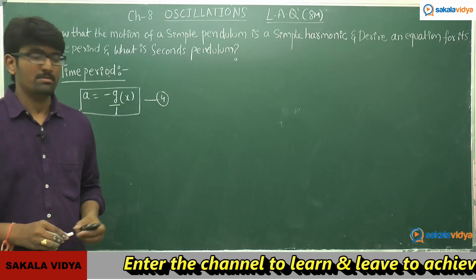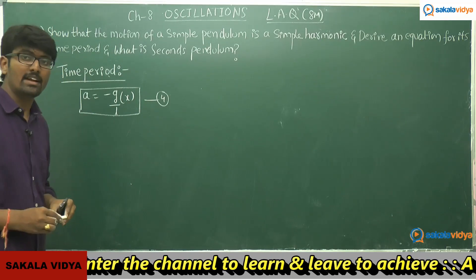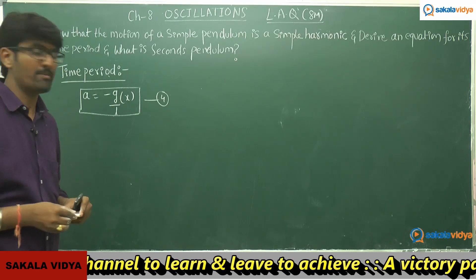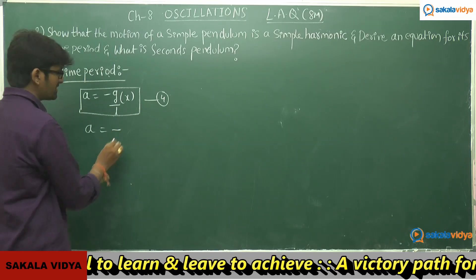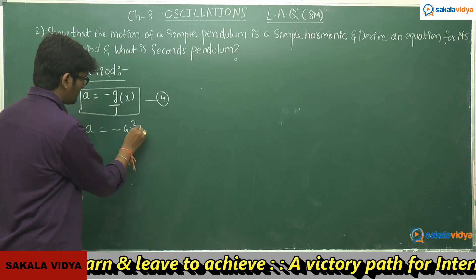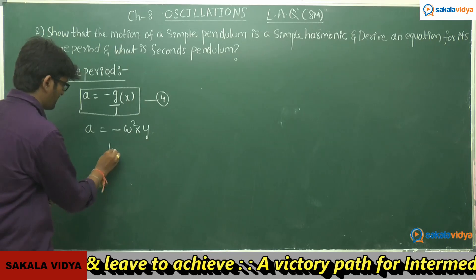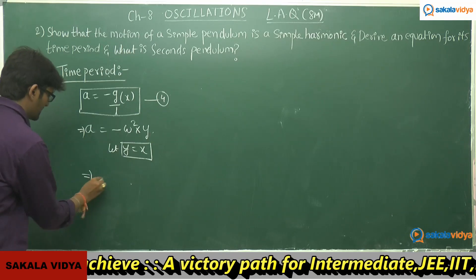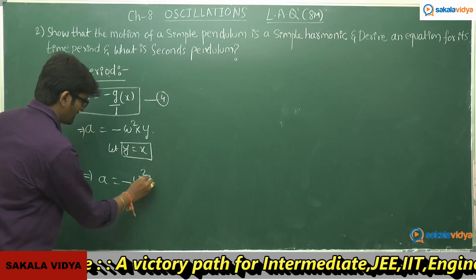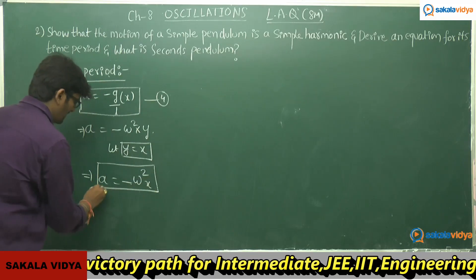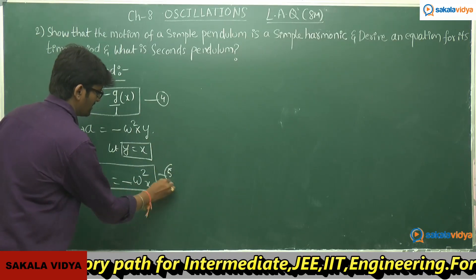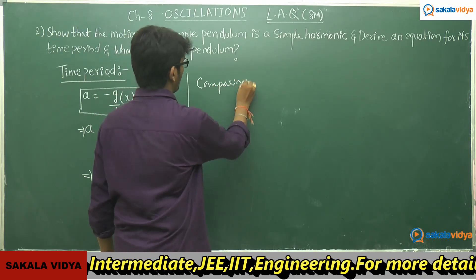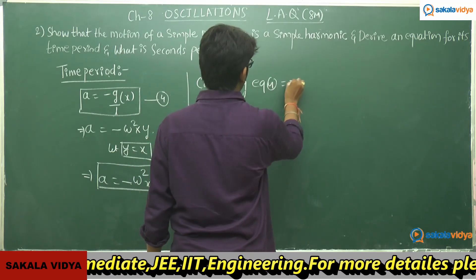Now let us find the time period for the simple pendulum. We have found that acceleration = −(g/L)x (equation 4). The basic SHM equation is a = −ω²x (equation 5). Comparing equation 4 with equation 5, we equate: −(g/L)x = −ω²x. The minus signs and x cancel, giving g/L = ω².